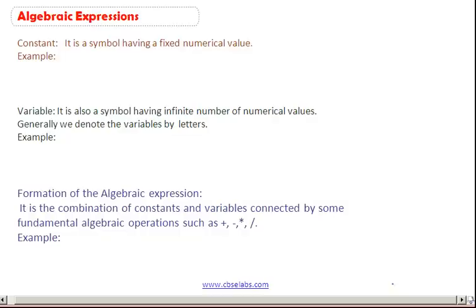An algebraic expression is a combination of constants and variables. What is a constant? It is a symbol having a fixed numerical value such as 5, minus 25, 70, and so on.